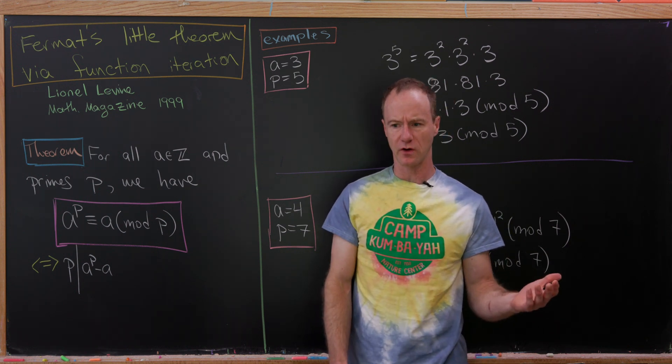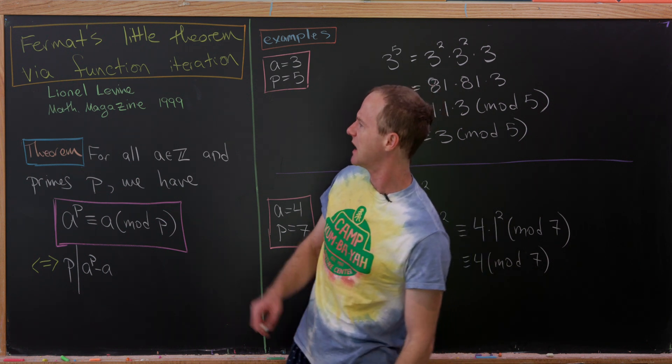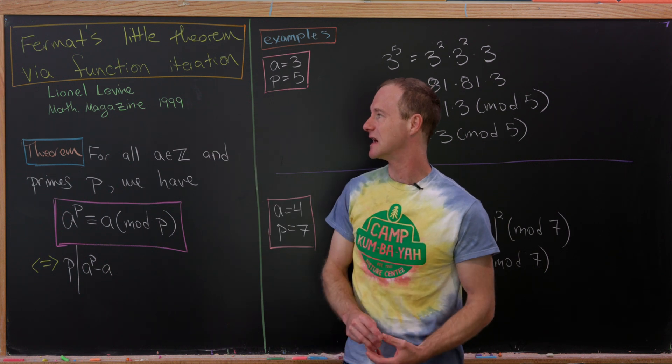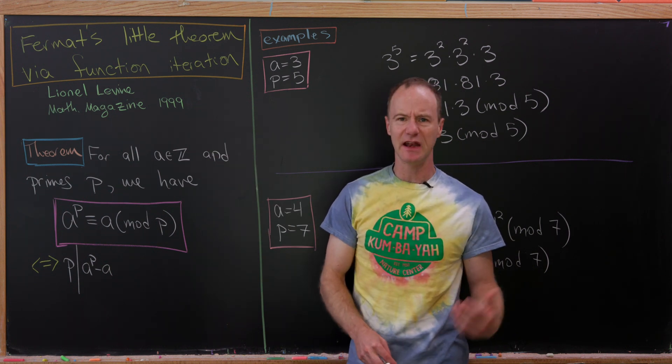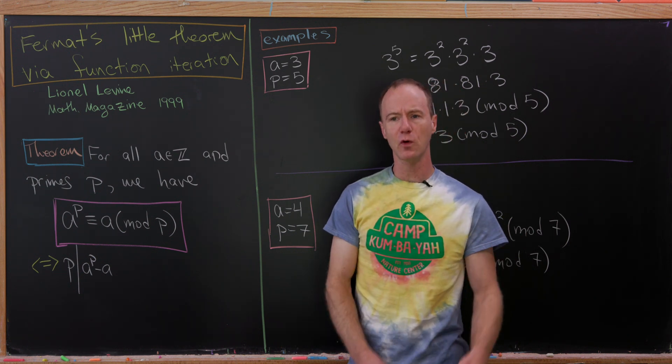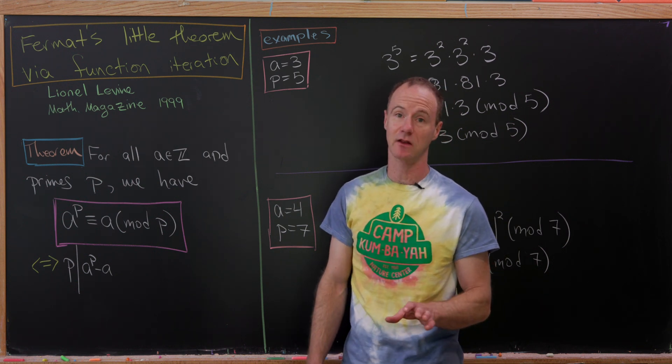So I thought I'd go over a proof that's new to me of this theorem. And it comes from Mathematics Magazine from 1999, and it's from Lionel Levine. And it involves the iteration of a certain function. But before we get to the proof, let's recall what Fermat's Little Theorem is and look at some examples.